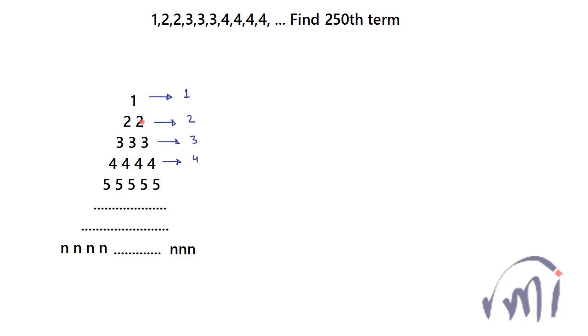So if I count: first term, second term, third term, fourth term, fifth term, sixth term, 7, 8, 9, 10, and then the 11th term — if I count these terms in this fashion, it is nothing but this problem.